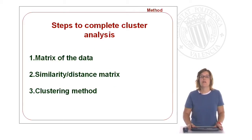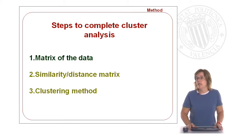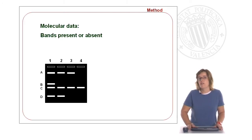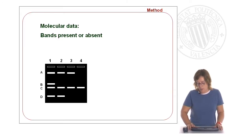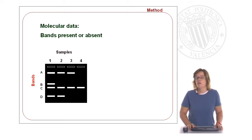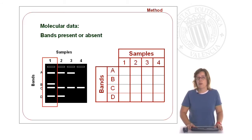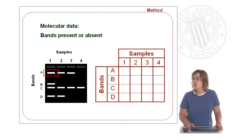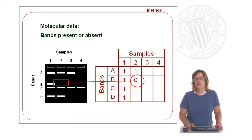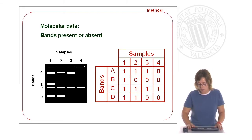What are the steps to complete a cluster analysis? First of all we need a matrix of the original data. In our case, data from molecular markers, so you have to analyze the presence or absence of a concrete band. In this example we have four samples and four bands, and if we want to transform these results from the gel into a matrix, we need to code each of the bands which are present as a one, and the absence of a band is coded as zero. This way you get your matrix from the gel results.